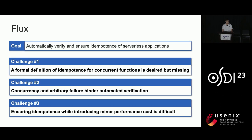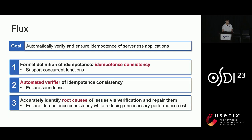We present a new toolkit called Flux to automatically verify and ensure idempotence of service applications. There are three main challenges: first, how to formally define idempotence for concurrent functions, since a formal definition is still missing; second, concurrency and arbitrary failure introduce infinite function interleavings, making automated verification hard; and third, ensuring idempotence while introducing minor performance cost is difficult. To address these, Flux proposes a new formal definition called idempotent consistency, designs an automated verifier, and uses the verifier to identify root causes and repair idempotent issues.